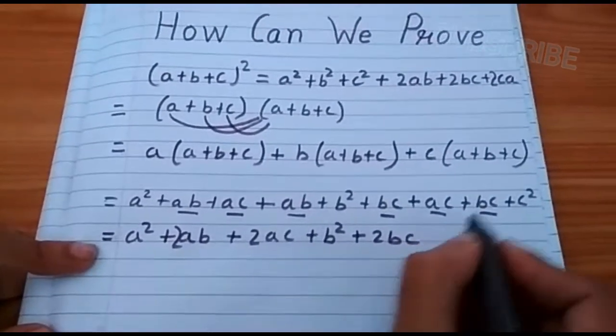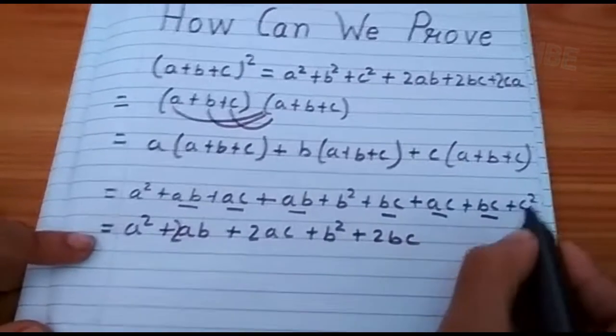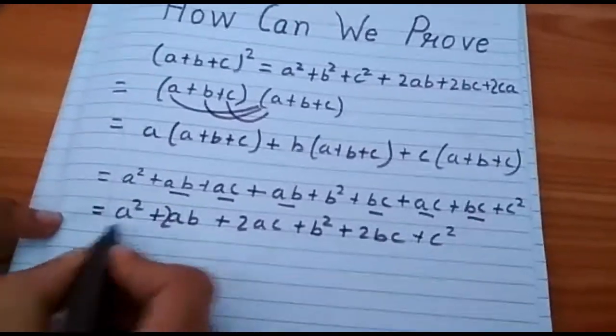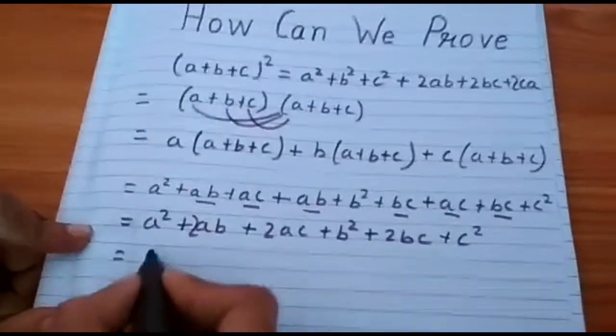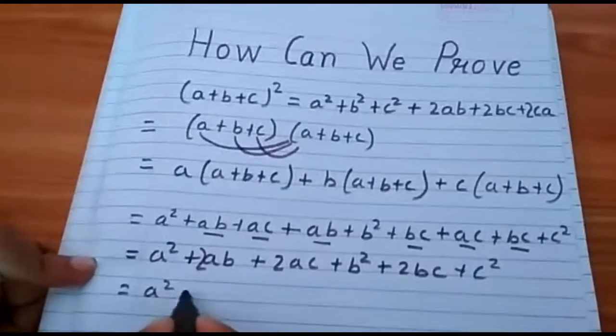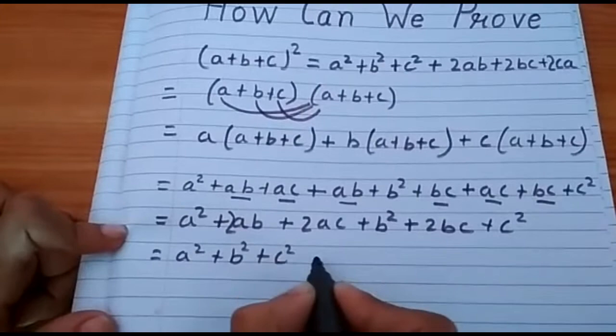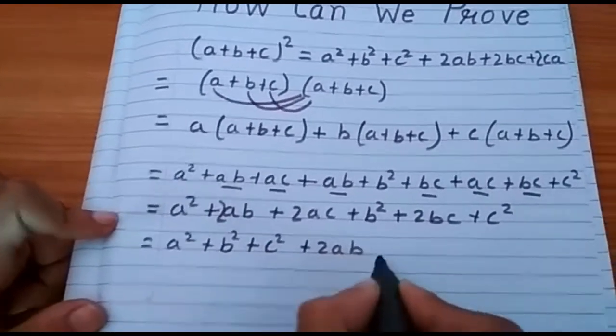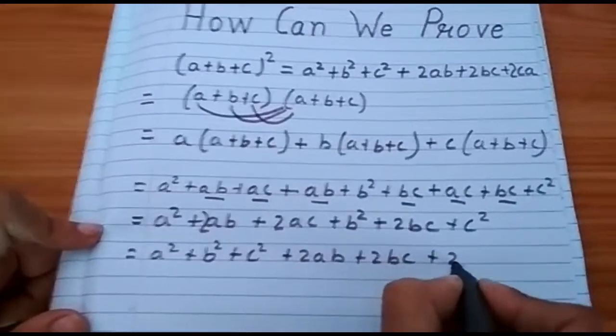Then we see how many c² is there. There is only one c². Then let us arrange this. First of all, a². Plus b². Plus c². Plus 2ab. Plus 2bc. Plus 2ca.